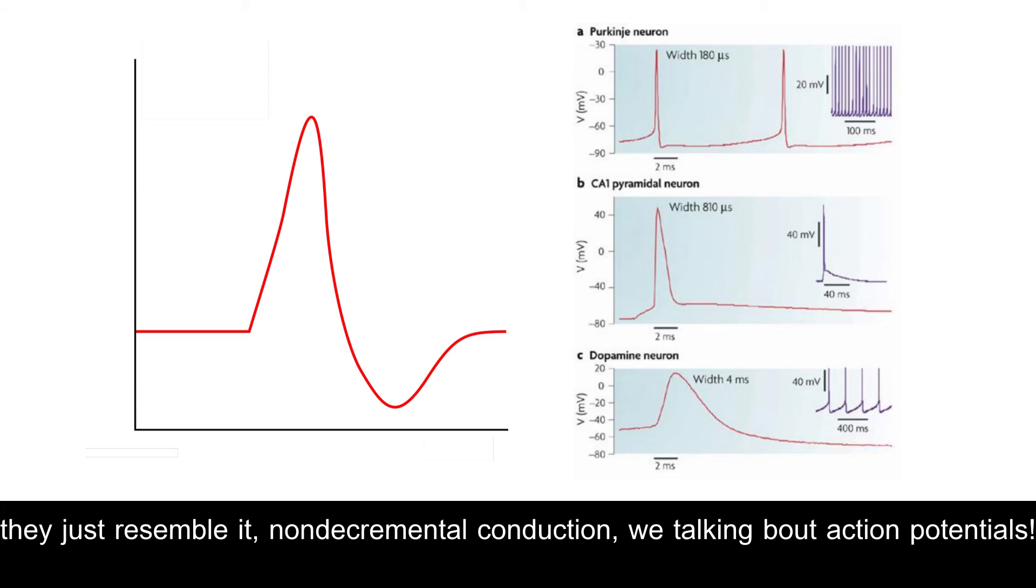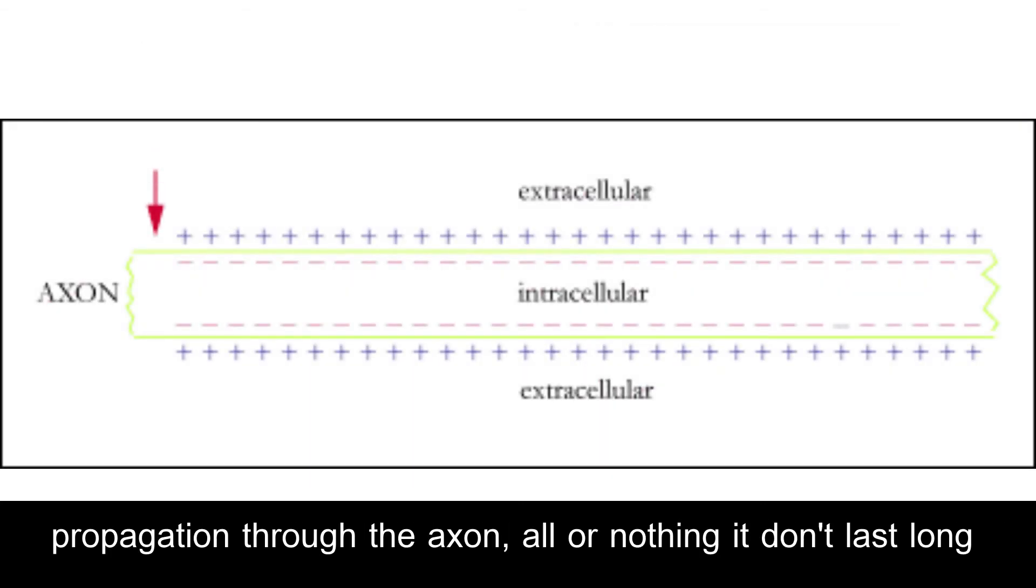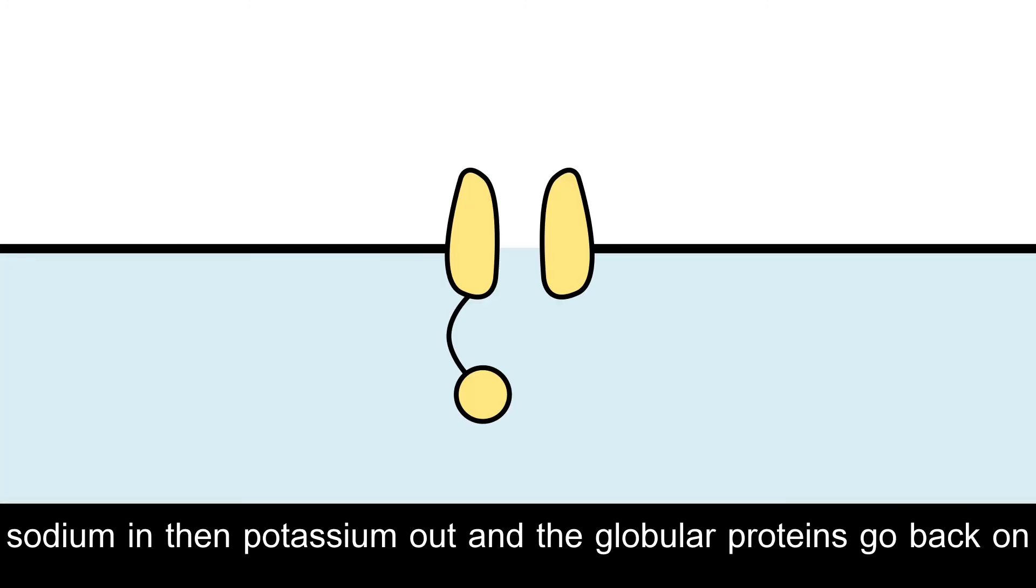Non-decremental conduction, we talking about action potentials. Propagation through the axon, all or nothing, it'll last long. Sodium and then potassium out, and the globular proteins go back on.